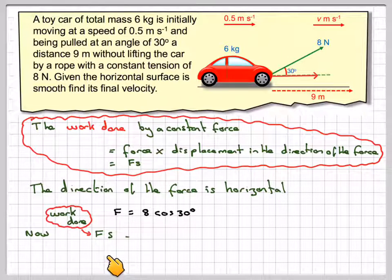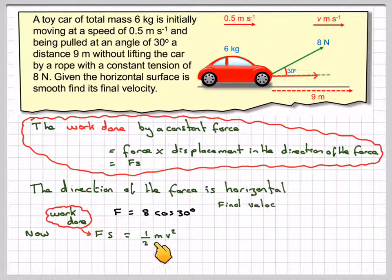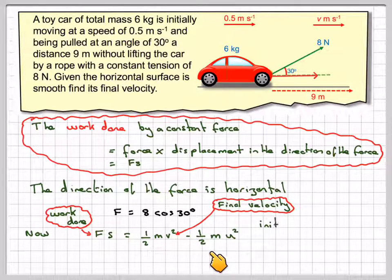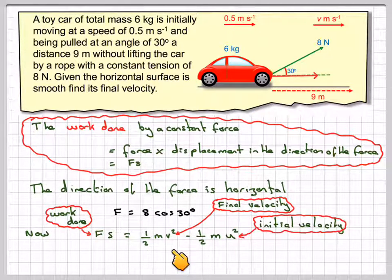Now we know from before that the work done is equal to 1 half MV squared minus 1 half MU squared, where V is the final velocity and U is the initial velocity.